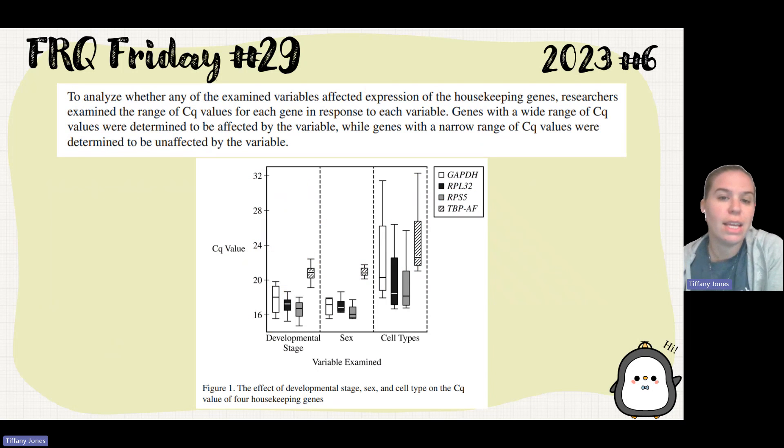A high Cq value for a sample indicates the gene was expressed at a low level. To analyze whether any of the variables affected expression of the housekeeping genes, researchers examined the range of Cq values for each gene in response to each variable. Genes with a wide range were determined to be affected by the variable, while genes with a narrow range were determined to be unaffected by the variable.